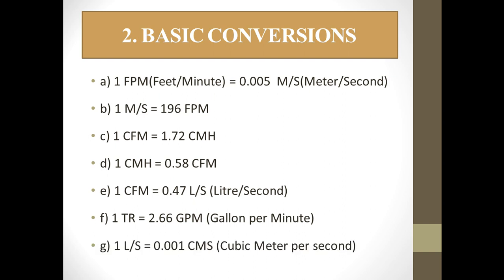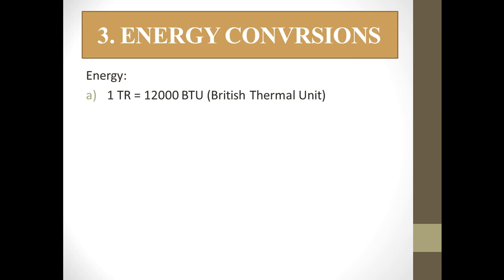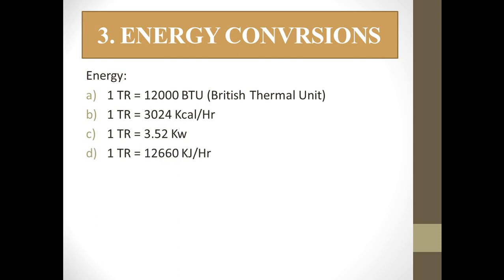(f) 1 TR = 2.66 GPM (gallons per minute) — applicable only in water-cooled chillers; (g) 1 liter per second = 0.001 cubic meters per second. Now let us come to energy conversions: (a) 1 TR = 12,000 BTU (British Thermal Units); (b) 1 TR = 3024 kcal per hour.